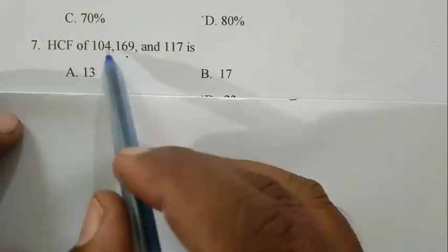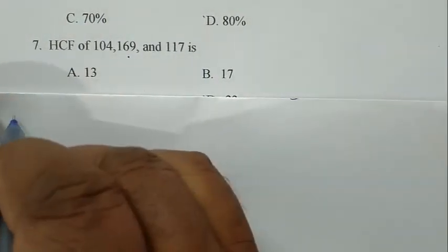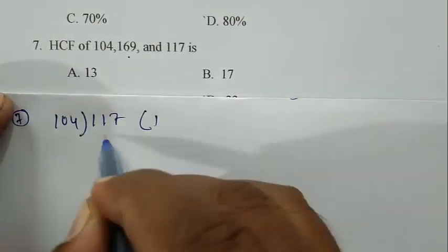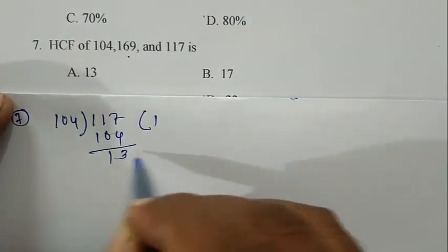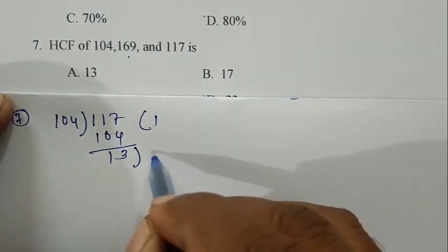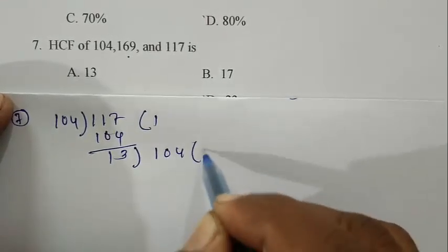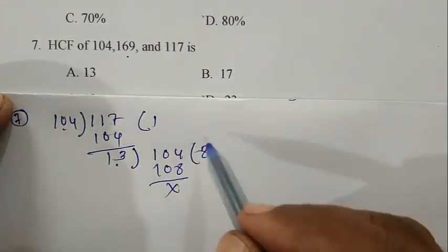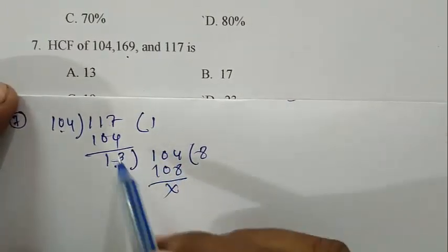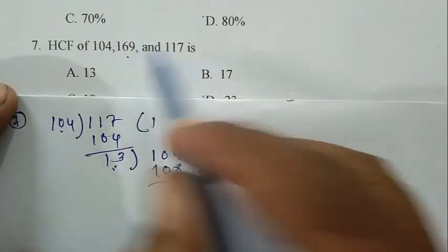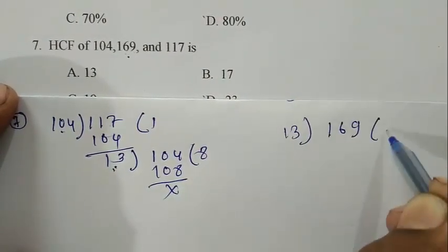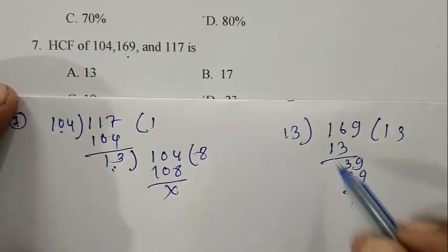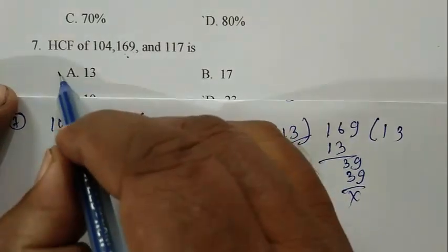We calculate it by the division method. First we calculate HCF of 104 and 117. Divide 117 by 104. That is 1, remainder 13. Then divide 104 by 13, that is 8. So HCF of 104 and 117 is 13. Then we calculate HCF of 13 and 169. 13 goes into 169 exactly 13 times. So HCF is 13. A is the correct answer.